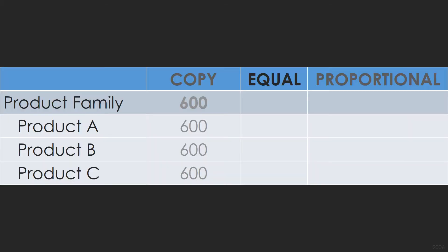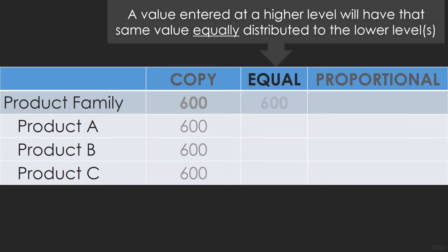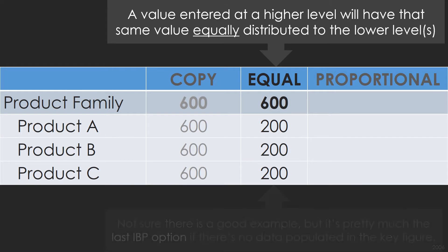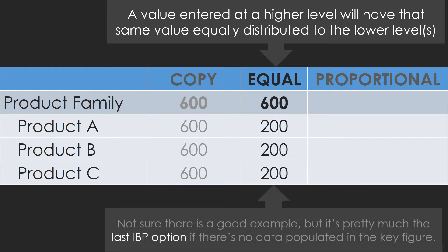Equal. A value entered at a higher level will have that same value equally distributed to the lower levels. Not sure there's a good example, but it's pretty much the last IBP option if there's no data populated in the key figure.